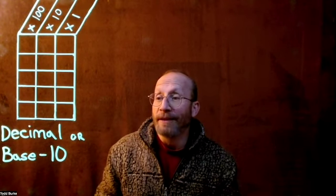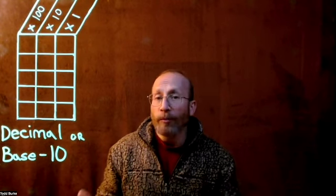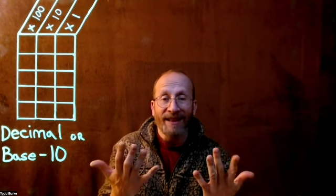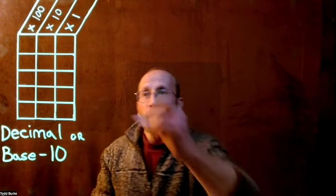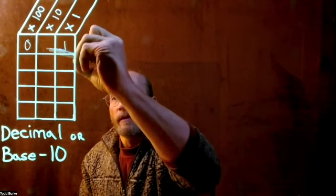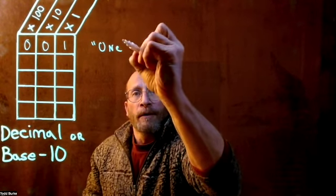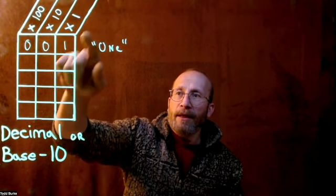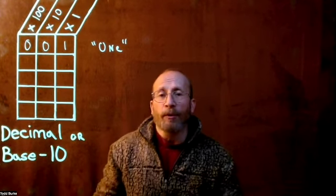Our first number system is the decimal system. It's what we're familiar with already. It's also called base 10. You maybe haven't heard that before, but that's because it's based on 10 digits — like we have 10 digits on our fingers, and each digit is a power of 10. We call this number one. There'd be no reason to write it any other way, but either way, you're going to call that one. Because there's one digit in the first decimal, and that placeholder — everything gets multiplied by one.